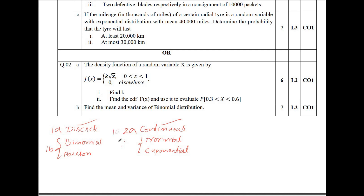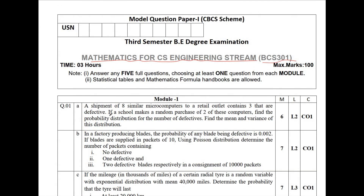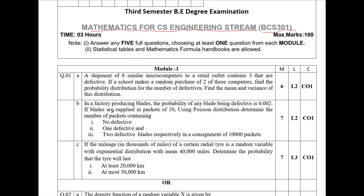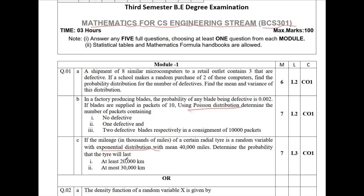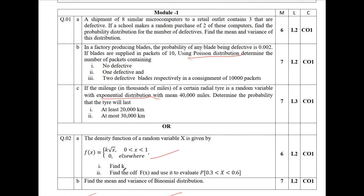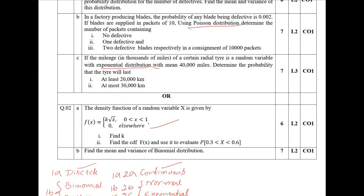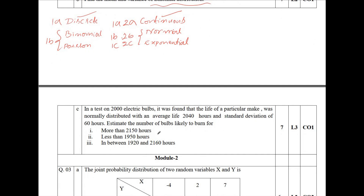So this is the combination they are going to have. The compulsory problem 1a will be on discrete random variable. Question number 1b is on Poisson distribution. Question number 1c is on exponential distribution. Question number 2a is on continuous random variable. Question number 2b is on binomial distribution. Question number 2c is on normal distribution. This is how the question paper will be set.